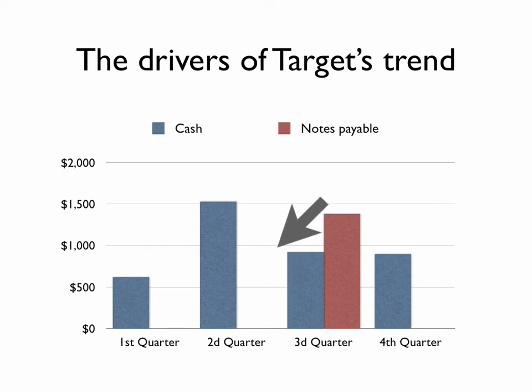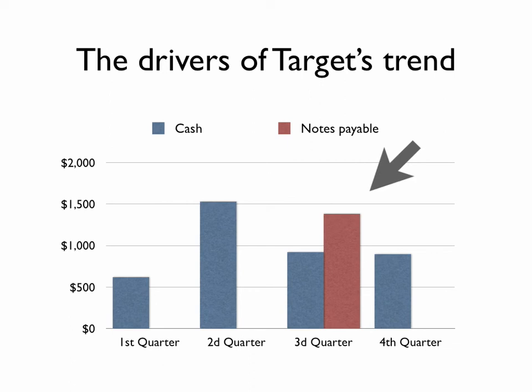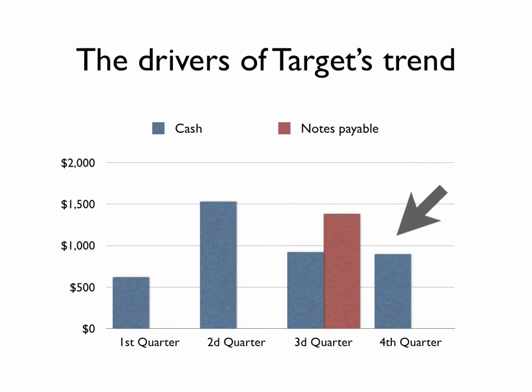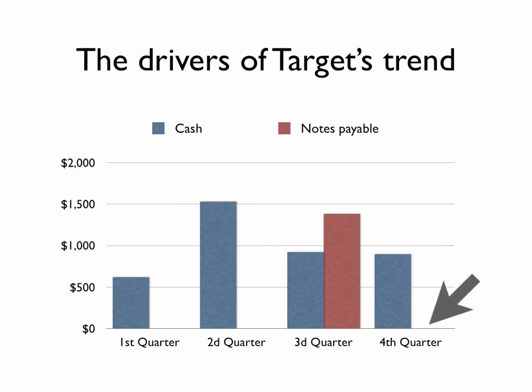In the third quarter, cash falls, but there are short-term borrowings, as Target builds working capital for the fourth quarter selling season and uses debt to finance it. In the fourth quarter, cash balances are stable and short-term debt is completely repaid, bringing the liquidity position back to higher levels.